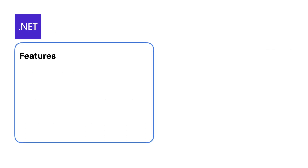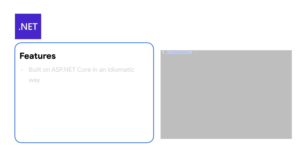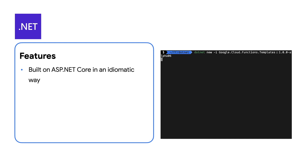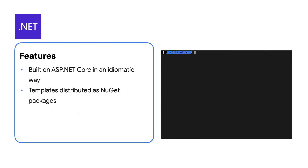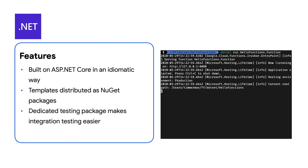The .NET Functions Framework is built on ASP.NET Core in an idiomatic way, incorporating familiar dependency injection. The templates are distributed as NuGet packages — just use dotnet new to get started. It includes a dedicated testing package so you can write unit and integration tests easily.